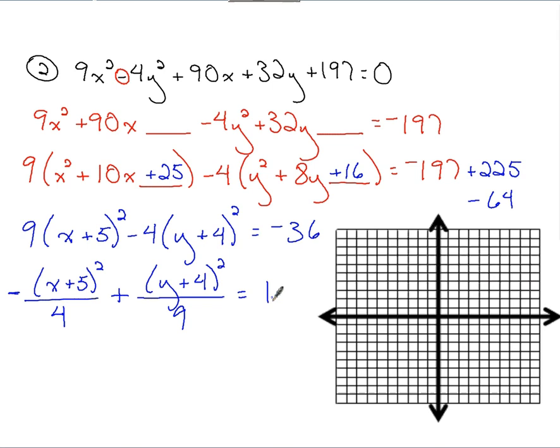So now we've got the form that we need to help us find all the key pieces to graph the hyperbola. So starting with the center. Let's see. With my x up here, I've got a positive 5, so x-coordinate's going to be negative 5. With my y up here, I've got a positive 4, so y-coordinate's going to be a negative 4. Go ahead and plot these pieces as I find them. Negative 5, 1, 2, 3, 4, 5. Negative 4, 1, 2, 3, 4.